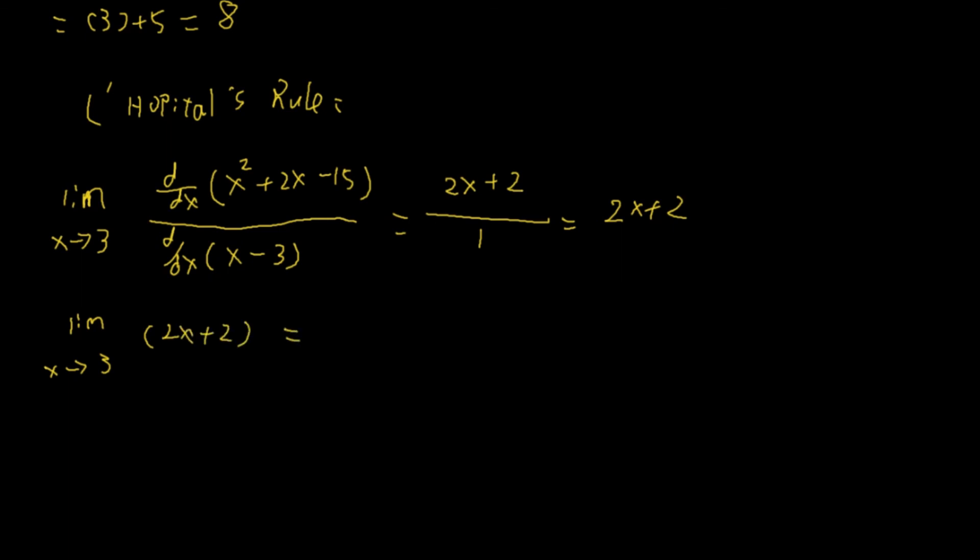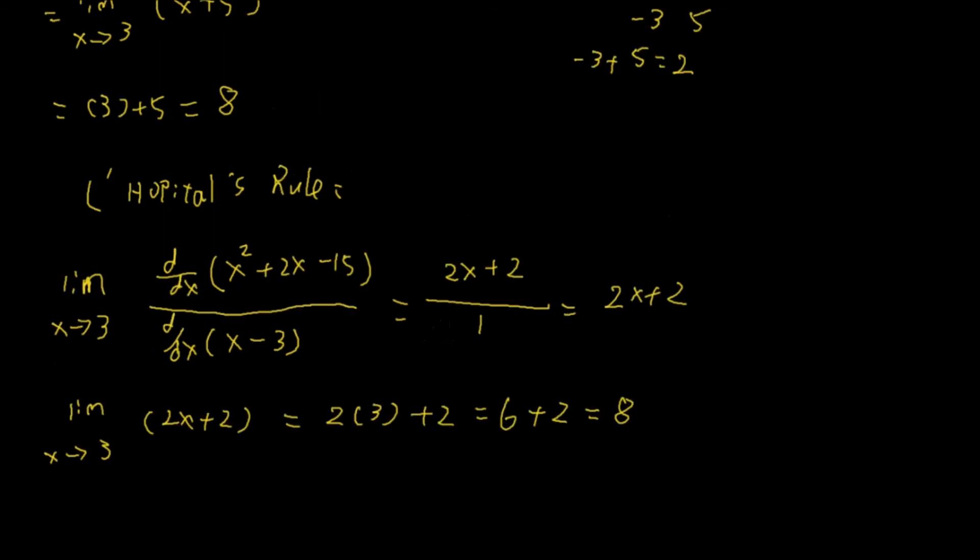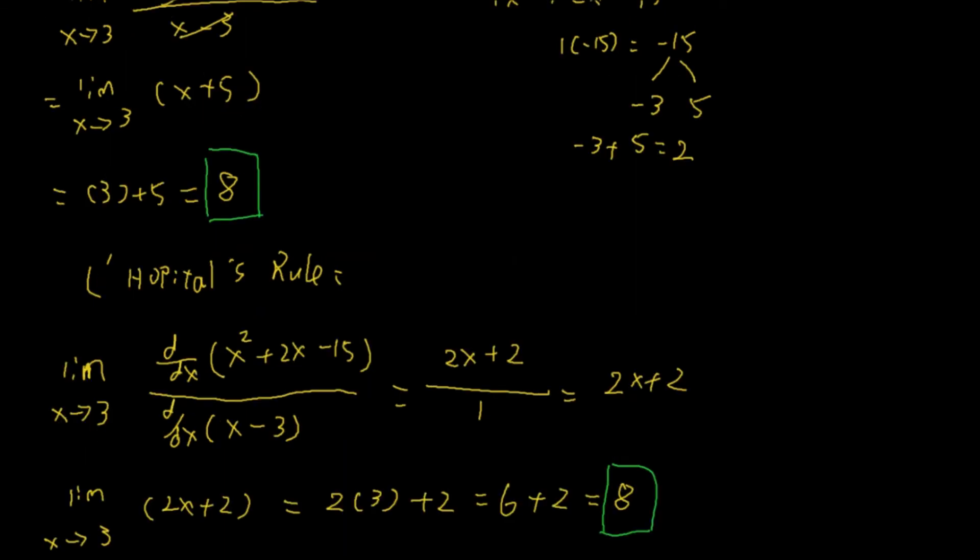Now, let's plug the 3 into the x. 2 times 3 plus 2. 2 times 3 is 6. 6 plus 2 is 8. Just to point this out that the answer we get using L'Hôpital's rule and the answer we get using the factoring is the same. They both are 8. That's how you find the limit of this function. Hope you enjoyed this video and don't forget to subscribe to my channel. Thank you.